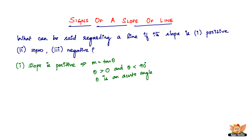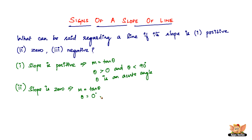Now let's look into what can be said regarding a line if its slope is 0. When the slope is 0, we know m equals tan theta. So if the slope has to be 0, then theta has to be 0 degrees.